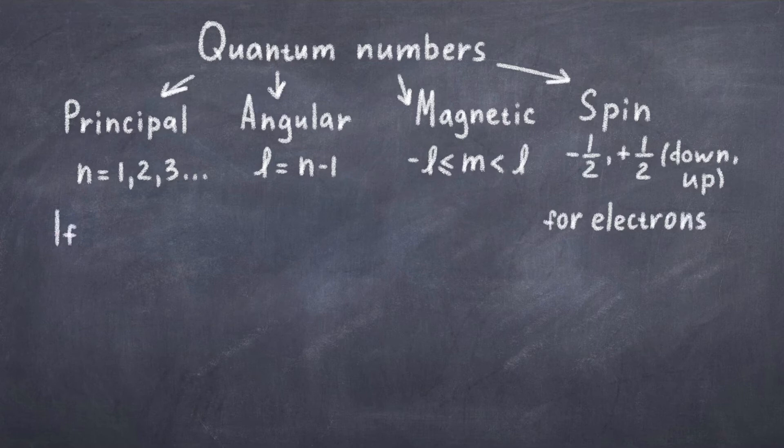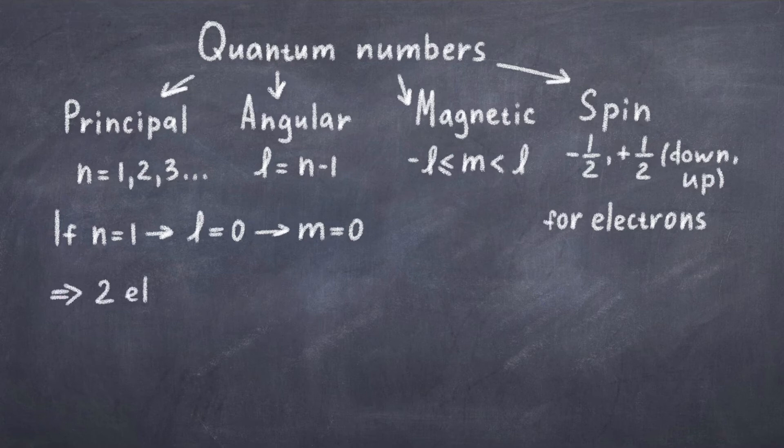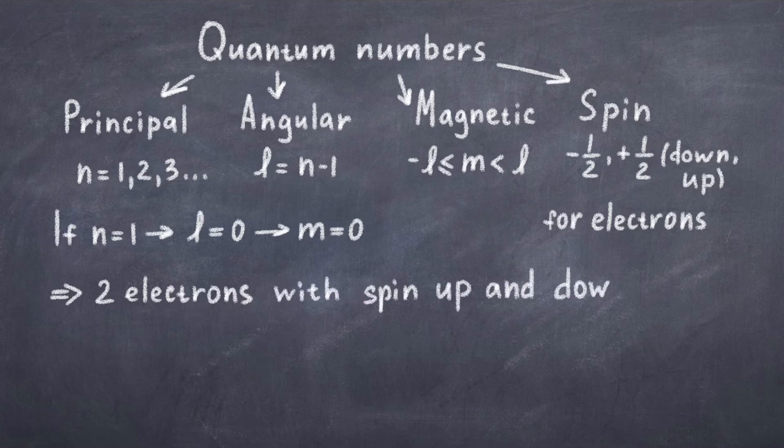As a quick example, one can consider the case where n is equal to 1. In this case, l and m must be 0, thus we have that there is one s orbital shell available. As we discussed in relation to the exclusion principle, you can't have an electron in the same state. Thus, in our example, there is only one s orbital available, and there can only be two electrons. One with spin up, and one with spin down, in order to have different quantum states.